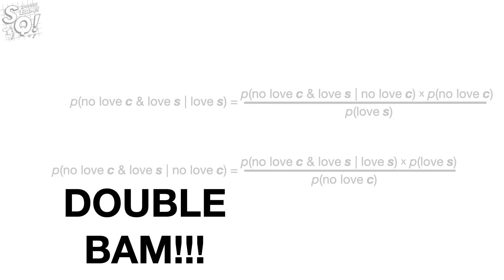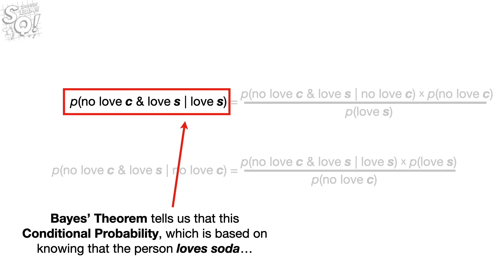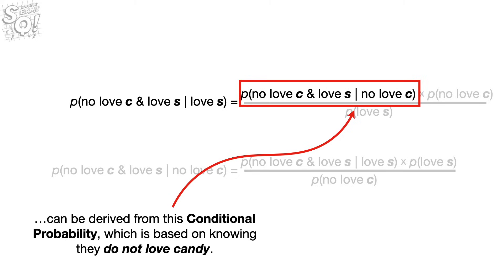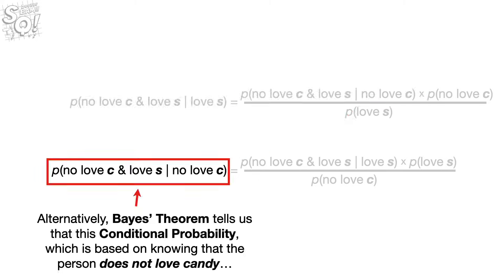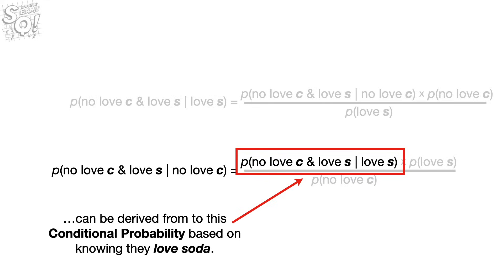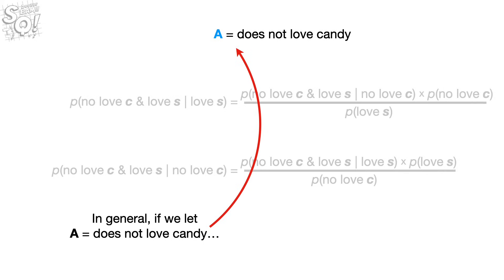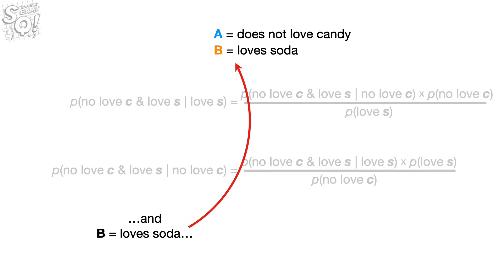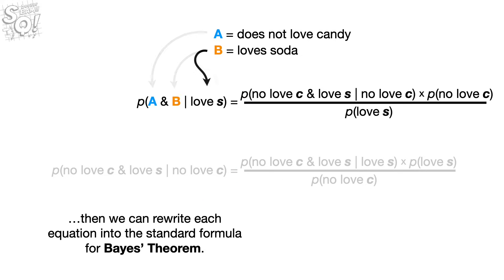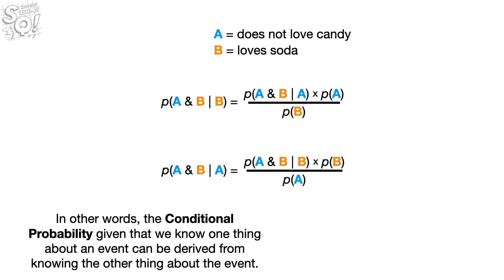Bayes' theorem tells us that this conditional probability — which is based on knowing that the person loves soda — can be derived from this conditional probability, which is based on knowing that they do not love candy. Alternatively, Bayes' theorem tells us that this conditional probability — based on knowing that the person does not love candy — can be derived from this conditional probability based on knowing they love soda. In general, if we let A equal 'does not love candy' and B equals 'loves soda,' then we can rewrite each equation into the standard formula for Bayes' theorem. In other words, the conditional probability given that we know one thing about an event can be derived from knowing the other thing about the event.